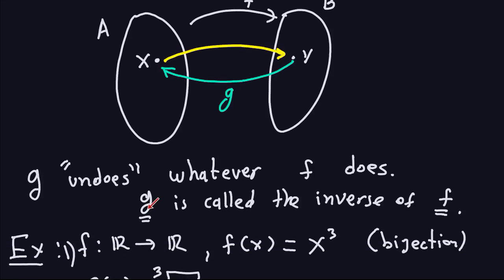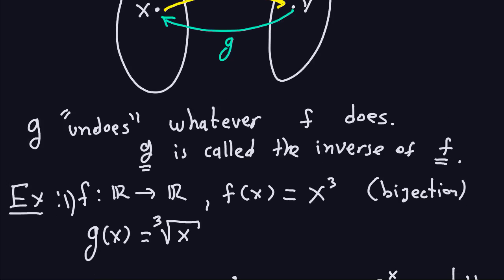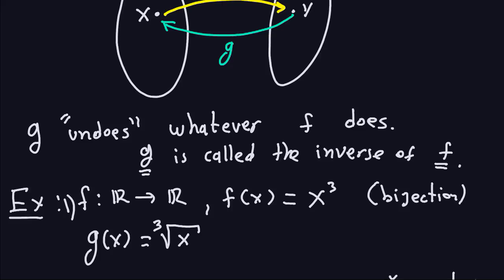This function G that exists and is unique is called the inverse of F. For example, take the function f(x) = x³ from the reals to the reals — we saw it's a bijection. What is its inverse? The inverse undoes whatever F does. F cubes the input, so undoing that means taking the cubic root. Therefore, the inverse function g(x) = ∛x. F does something and G undoes it, and G goes from the reals back to the reals. That's the idea of the inverse function.